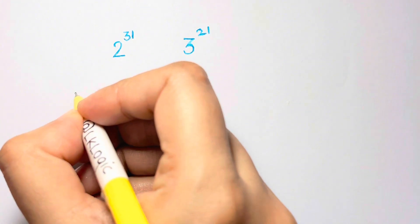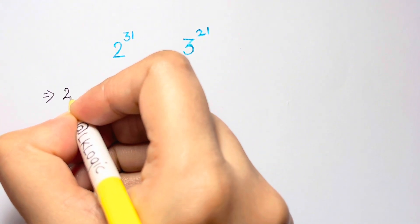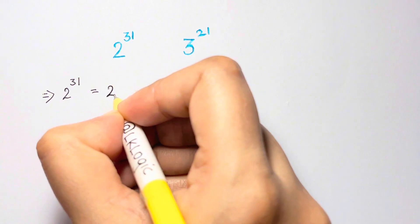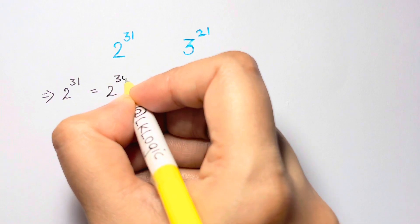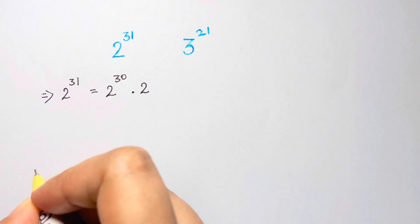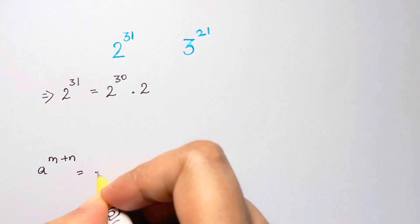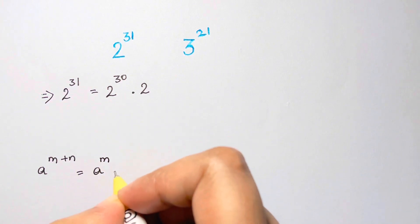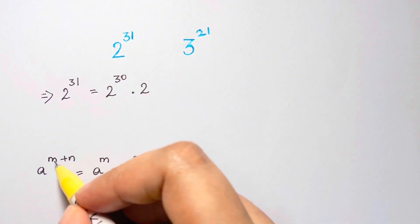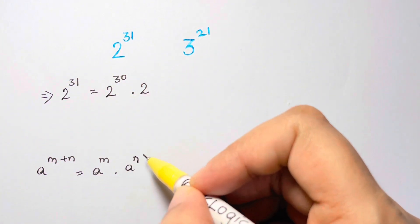Let's start with the first one: 2 to the power of 31. Let's break down the exponent. We can write 2 to the power of 31 as 2 to the power of 30 times 2. If we have something like a to the power of m plus n, you can write it as a to the power of m times a to the power of n. So I have split 31 into 30 plus 1.